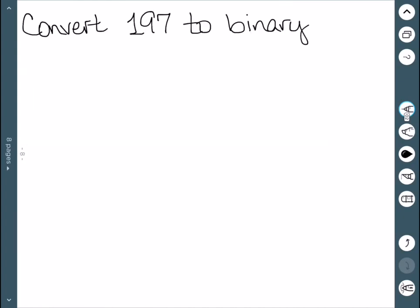For our last example, we'll convert 197 to binary, so base 2. 197 divided by 2 is 98 with a remainder of 1.